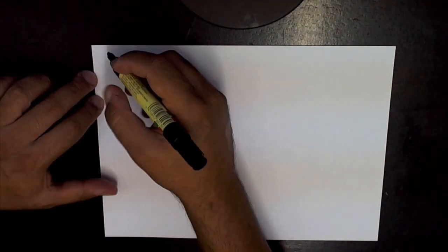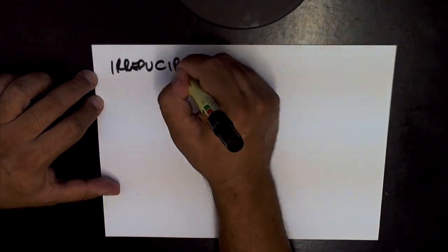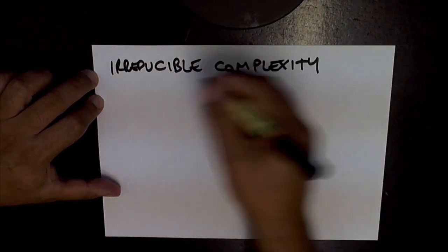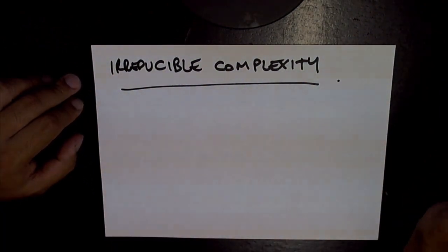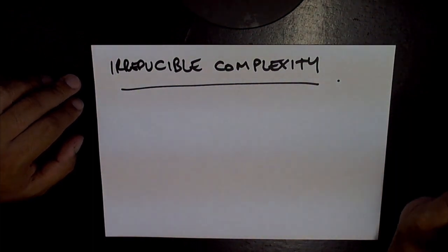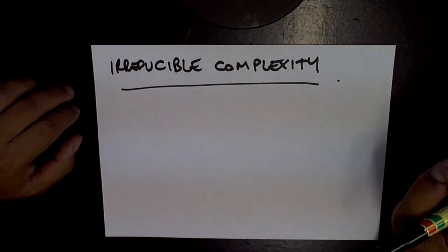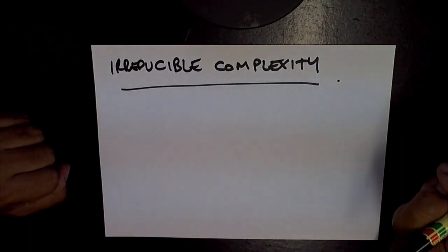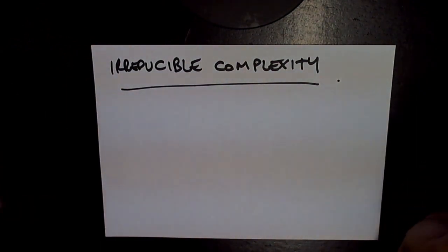Okay, this video is called the irreducible complexity of Hedera Hashgraph. What I mean by irreducible complexity is that when there is an item built for a certain purpose, there is a certain number of parts that must be necessary for the purpose to be fulfilled, and any lack of any part of that item will result in the purpose not being fulfilled.